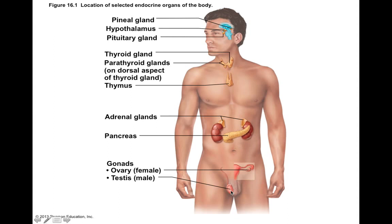Some other endocrine glands include the gonads, which include your testes and your ovaries. In this particular picture, it's just showing where the testes and ovaries would be in an individual — it's not saying that this individual has both testes and ovaries. These gonads release a series of hormones that have a lot of different effects, but just know that your testes and ovaries release important hormones for your body.